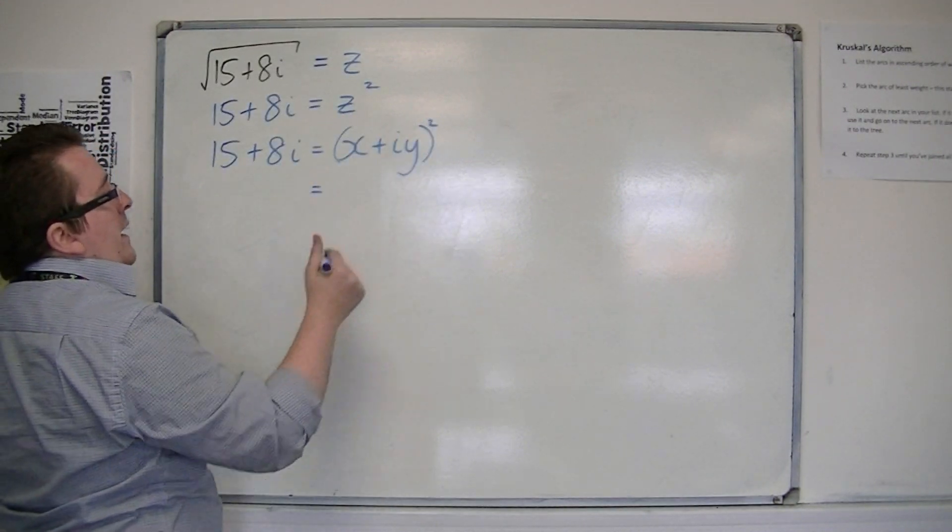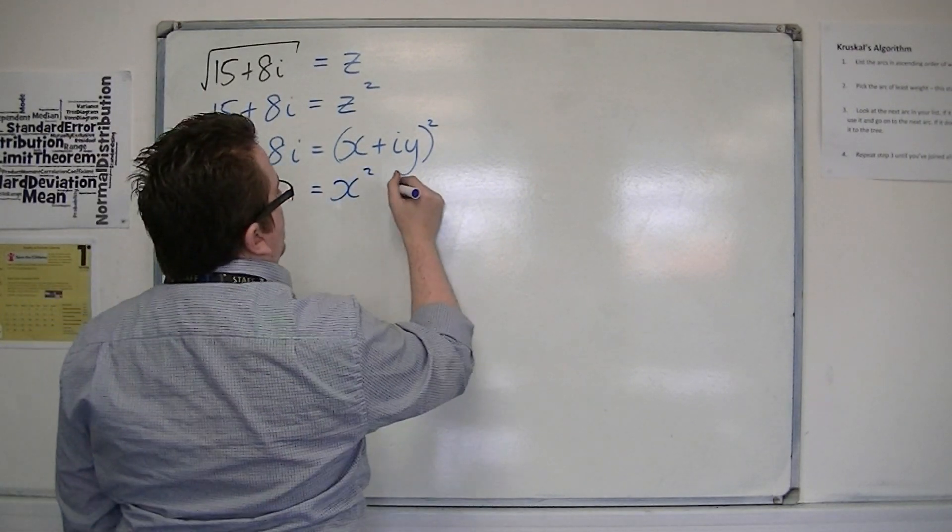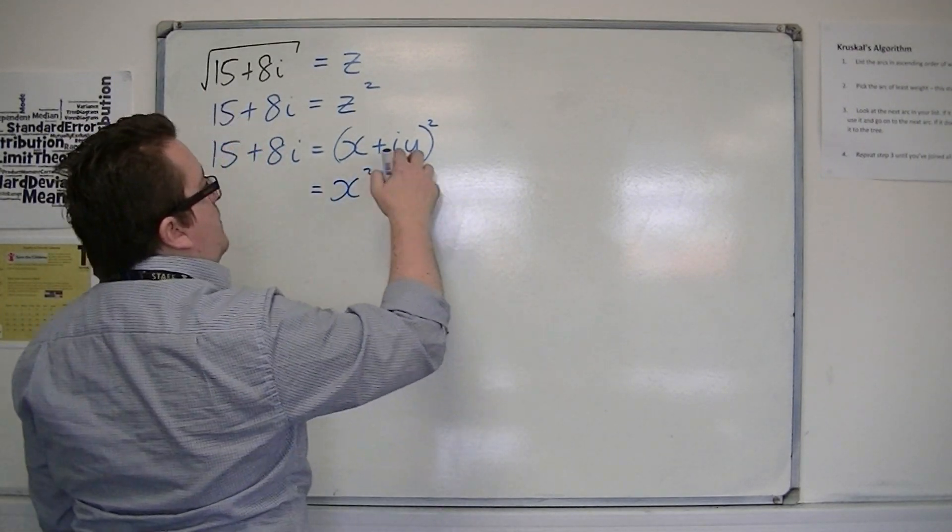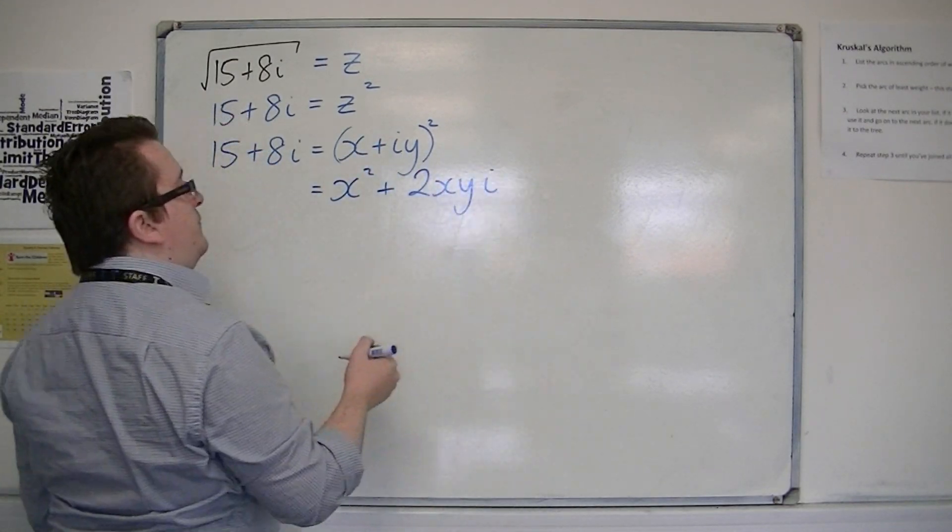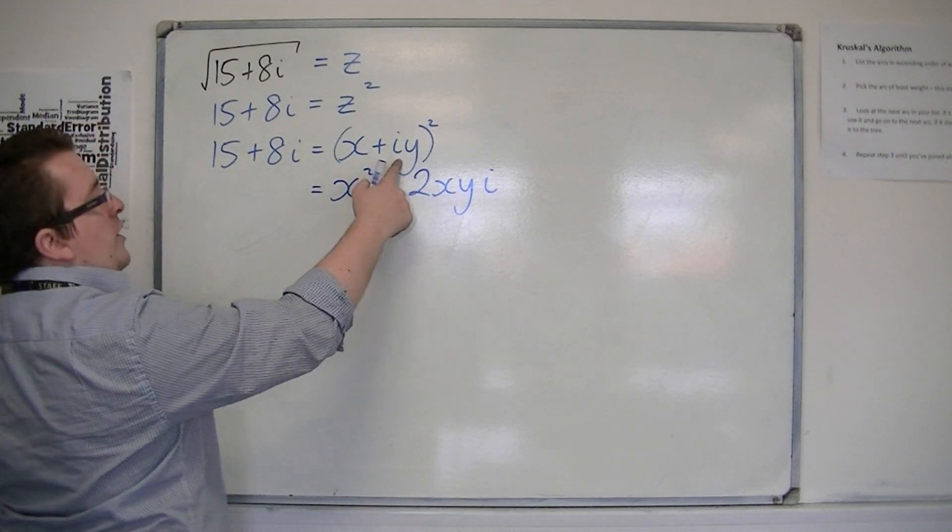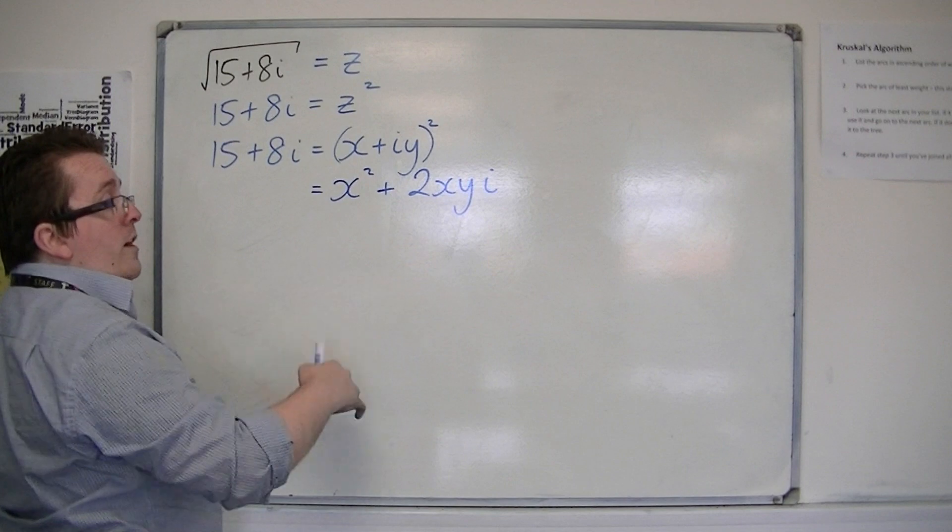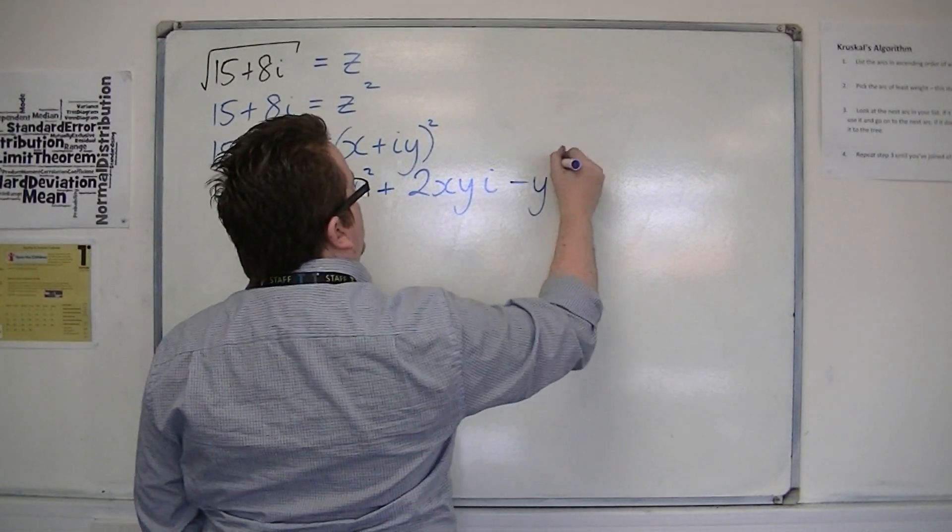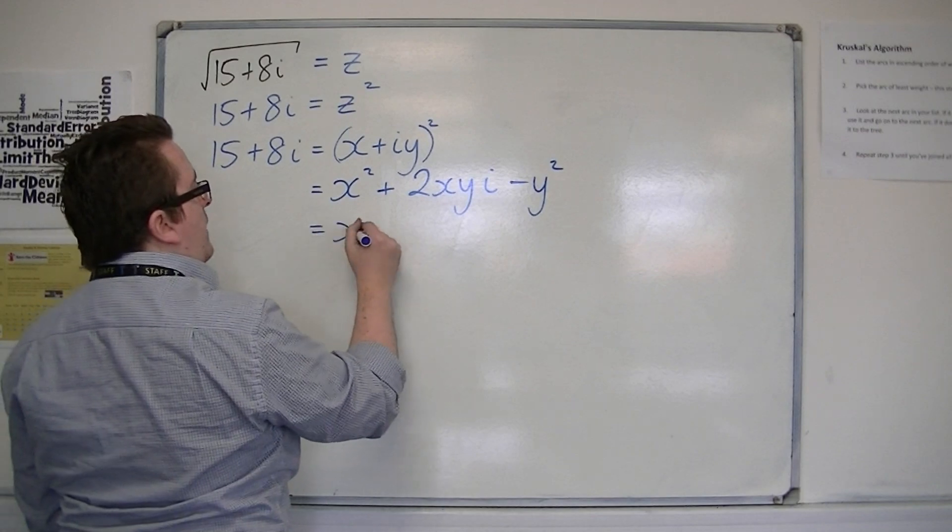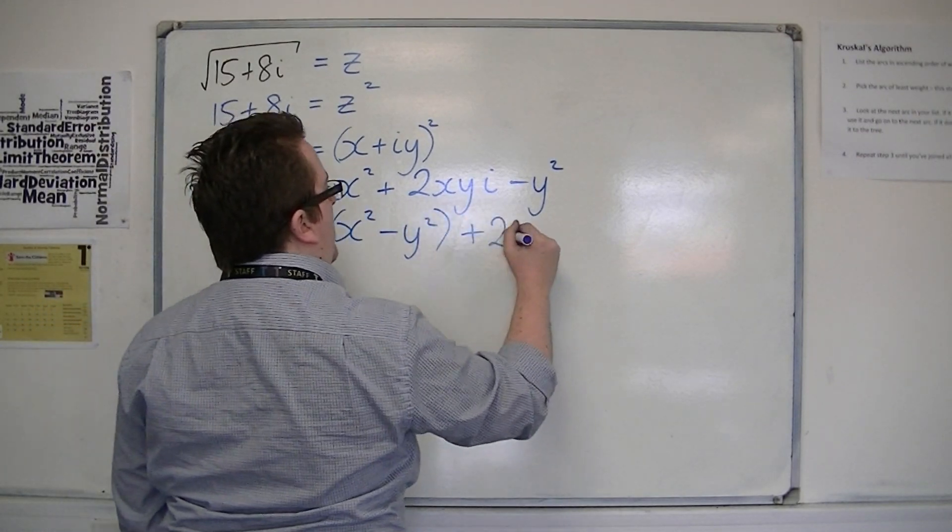So if I expand that, I'm going to get x squared plus 2xyi, and then I'm going to get iy times iy, which is going to be y squared i squared, which is going to be minus y squared. So that's x squared minus y squared plus 2xyi.